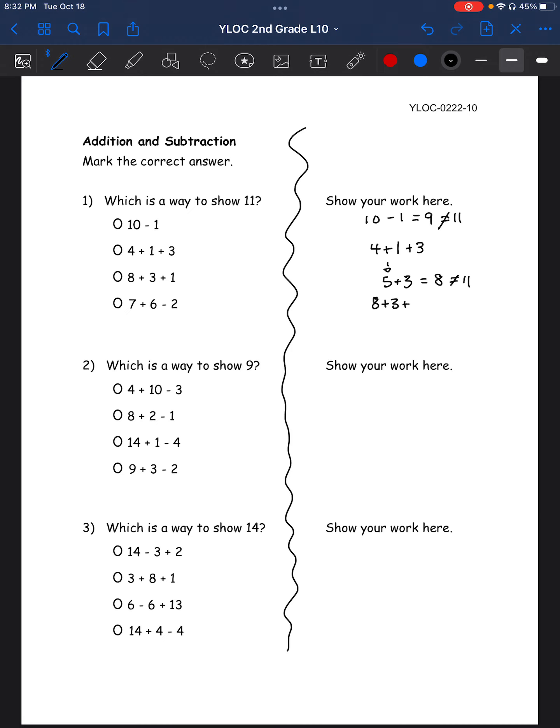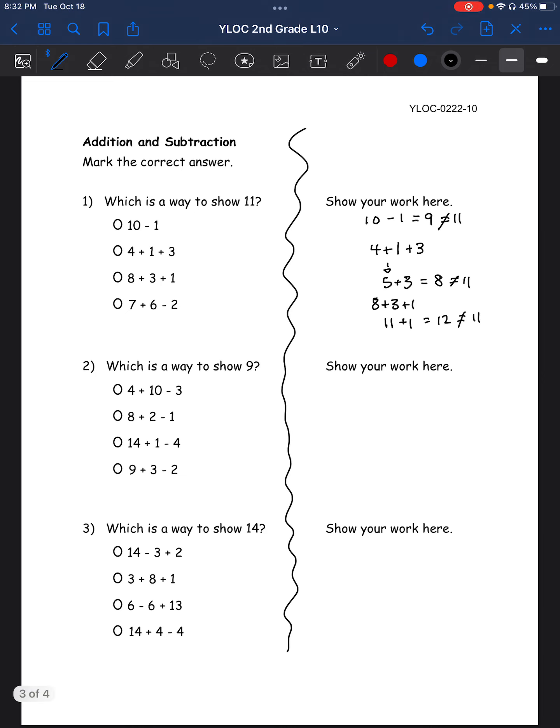So let's try 8 plus 3 plus 1. 8 plus 3 is 8. And then 1, 2, 3. So 8, 9, 10, 11. And then add 1, 12. This equals 12, which does not equal 11. This case is trial and error since we're trying every problem. But through process of elimination, we can already tell that this one has to be the right one, right?